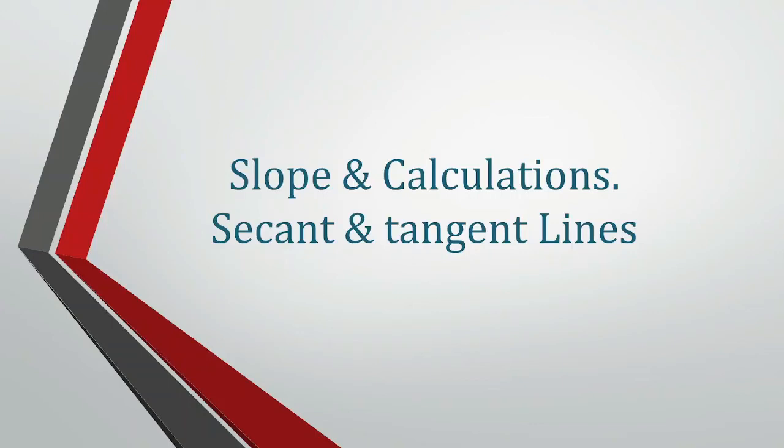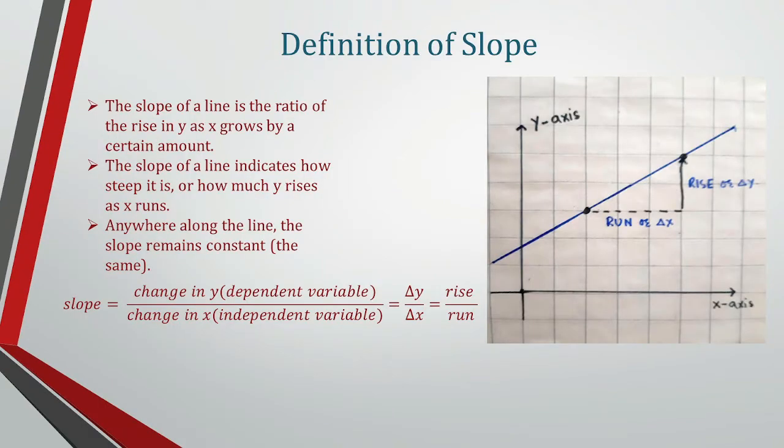Let's talk about slope calculation, secant and tangent lines. The slope of a line is the ratio of the amount that y increases as x increases. Slope tells you how steep a line is or how much y increases as x increases.